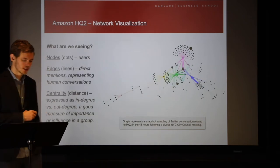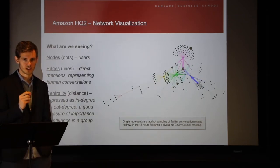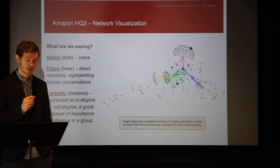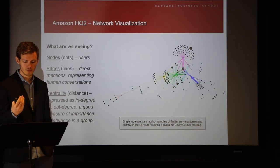So what you're looking at here is a network graph depicting Twitter conversation around a pivotal city council hearing. The dots represent individual Twitter users, the lines are conversations between them, and the distance is a measure of importance or influence within the network.